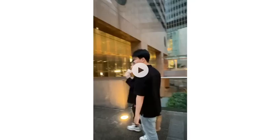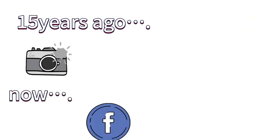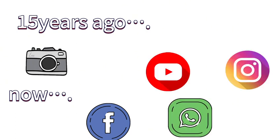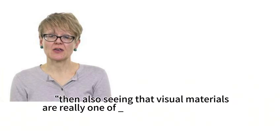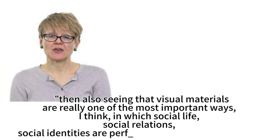These answers are exactly what I think. Visual research methods have changed a lot in the last 15 years. In the beginning, people were using digital cameras. And now with the popularity of Facebook, a lot of social media can be reflected. As Jillian Rose mentioned, visual materials are really one of the most important ways in which social life, social relations, and social identities are performed and enacted now.